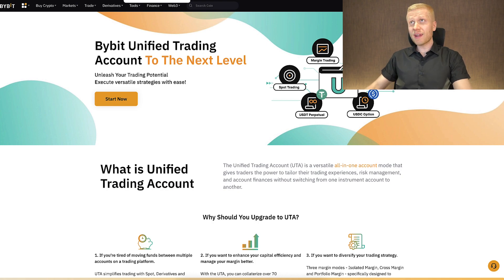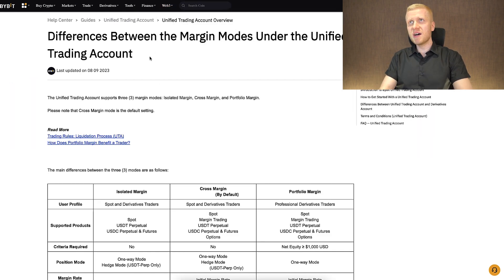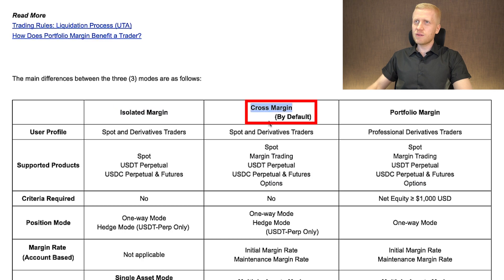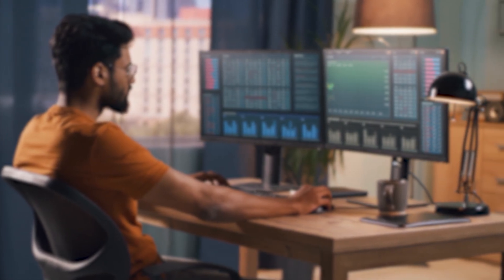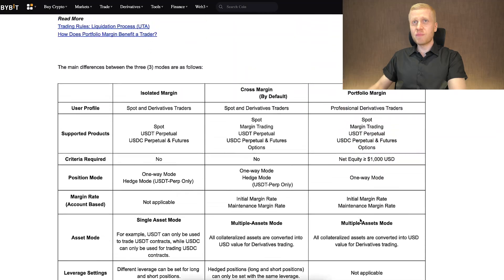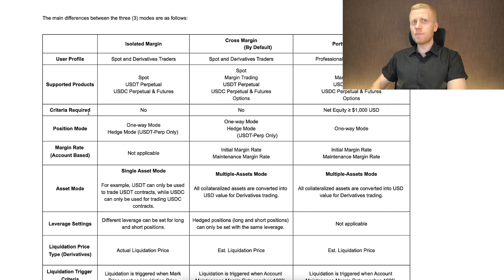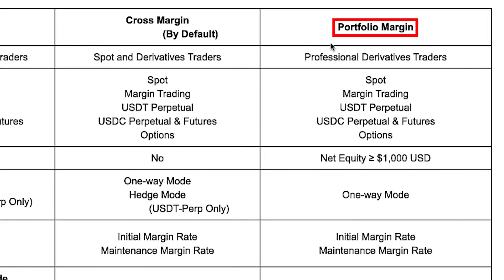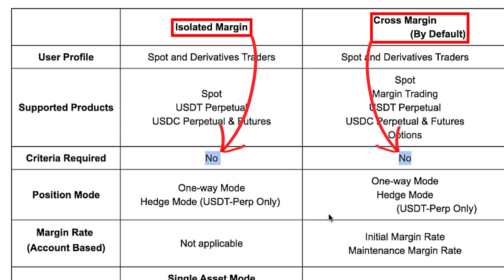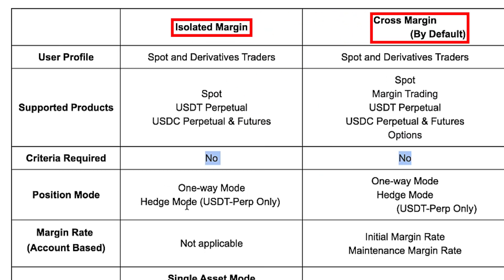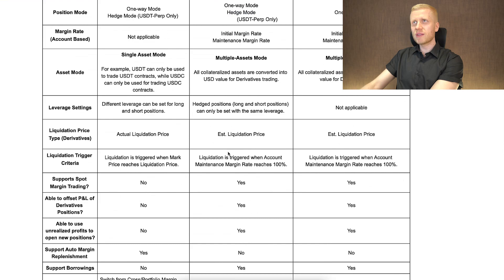When using a unified trading account, I recommend you study the differences between margin modes. There is isolated margin mode, cross margin mode which is the default, and portfolio margin mode which is usually for more professional derivatives traders. A couple of differences: portfolio margin requires at least $1,000 USD on your account, while cross and isolated margin have no required criteria. Portfolio margin also only supports one-way mode, while isolated and cross support hedge mode.